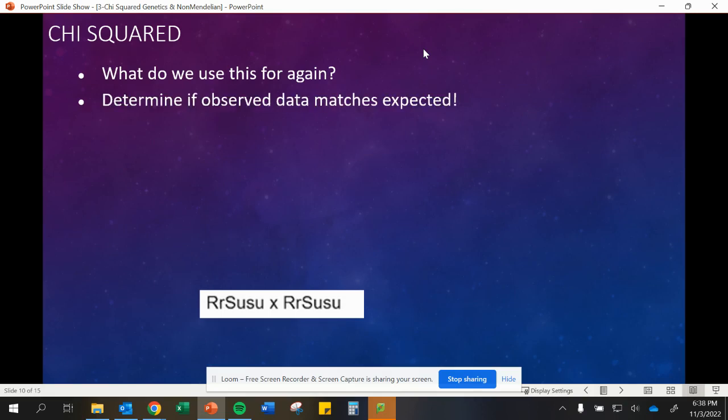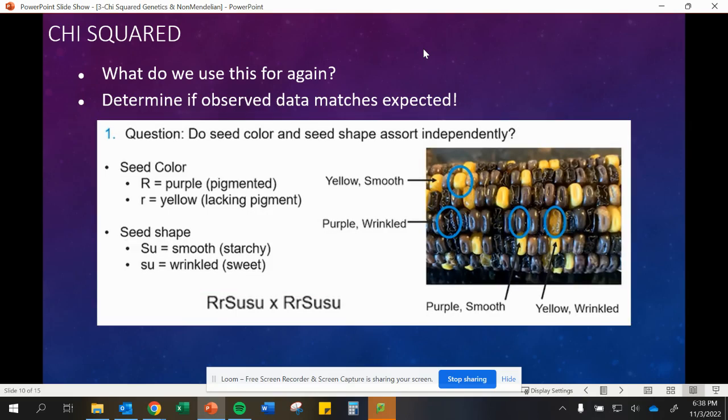What do we use this for again? Remember we're determining if our observed matches expected. We can have a cross that we're given, like this example here where we have seed color and seed shape that we are looking at. We can observe and count the number of individuals we see that are yellow and smooth, purple or wrinkled, purple smooth or yellow wrinkled. We can observe that.